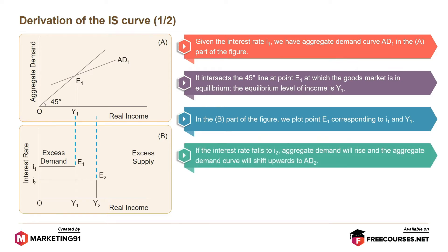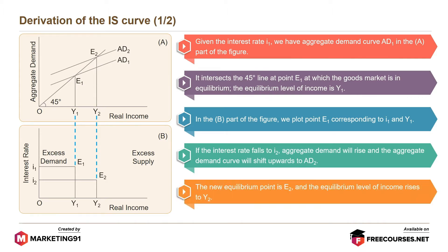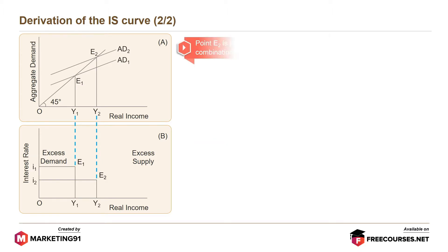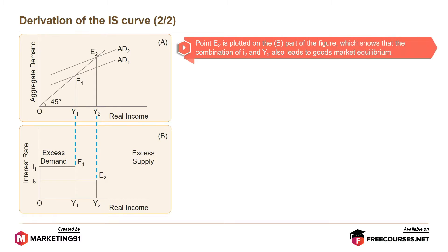If the interest rate falls to I2, aggregate demand will rise and the aggregate demand curve will shift upwards to AD2. The new equilibrium point is E2 and the equilibrium level of income rises to Y2. Point E2 is plotted on part B of the figure, showing that the combination of I2 and Y2 also leads to goods market equilibrium.